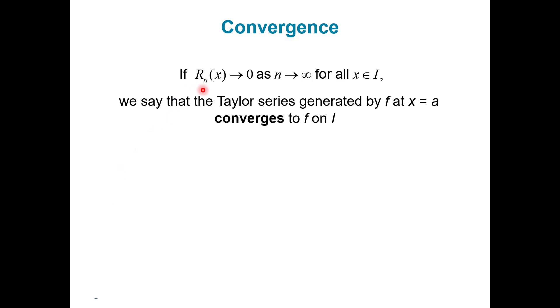Now if that remainder approaches zero as n approaches infinity, then what we get to say is that the Taylor series generated by that function at that value of a actually converges, converges to that function. And then we have the following result. Our function f of x equals this series. So it's no longer like strictly an approximation. We can just go ahead and say, all right, this function equals the series.